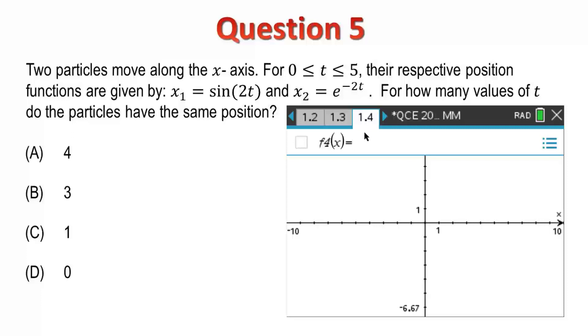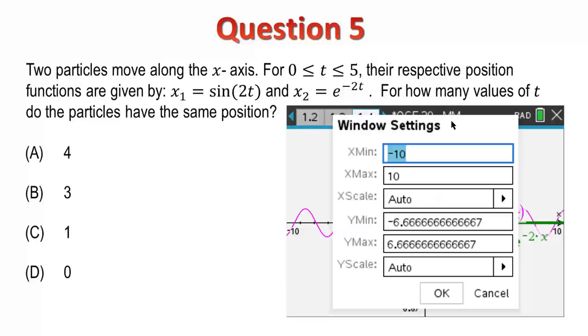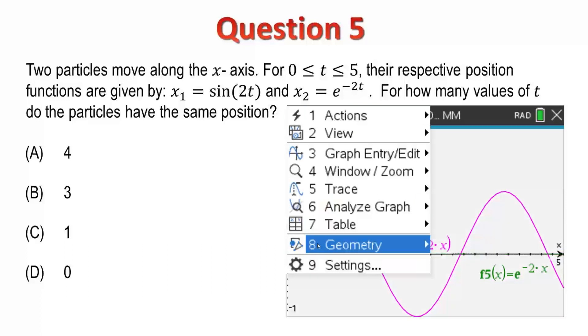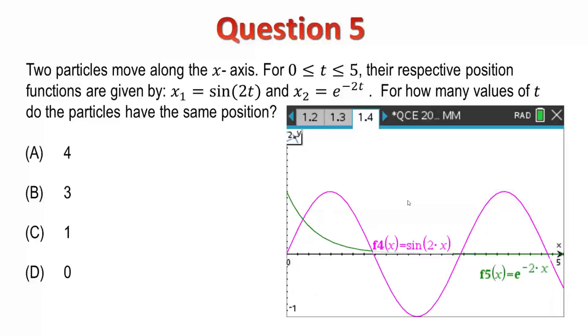I could define my functions over that domain of 0 to 5. However, I'm just going to set the window settings because that's quick and easy. I'm going to use my function editor. So, it'll be f of x equals sin 2x and f of x equals e to the negative 2x. I'll set my window settings to go from 0 to 5 along the x-axis. And, we can see that there are 4 points of intersection. So, my answer is A.